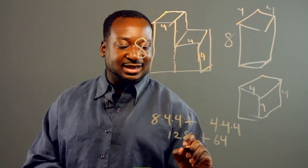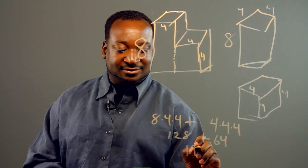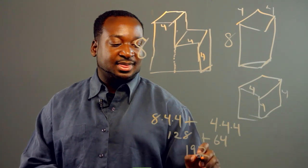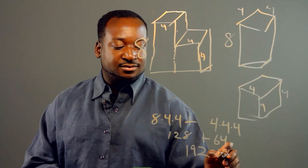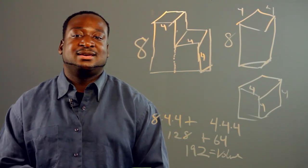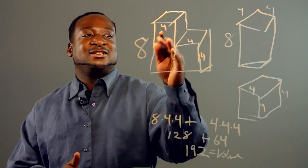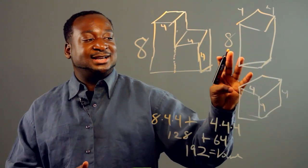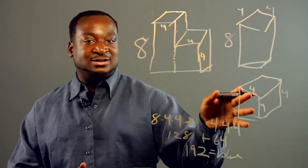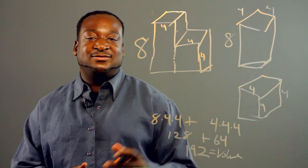That gives me 192. And thus I have my answer. You break it down into its irregular shapes, and then you calculate the volume for each shape, and then you add the volumes together.